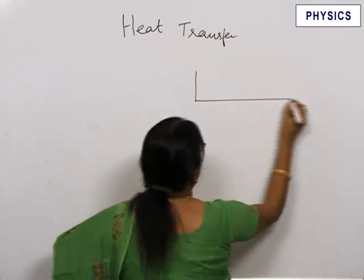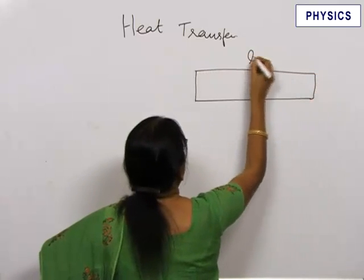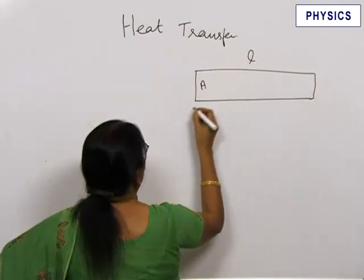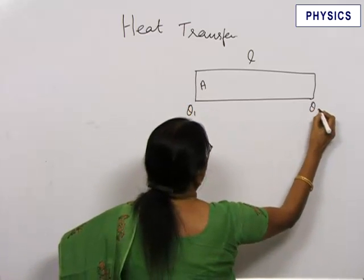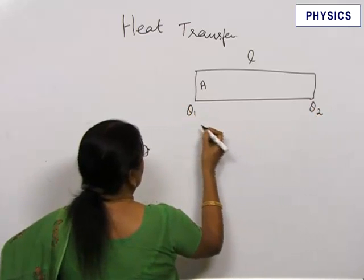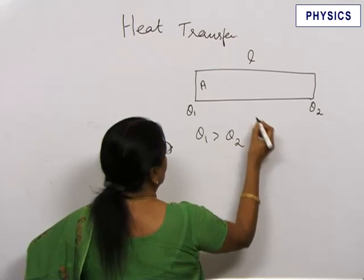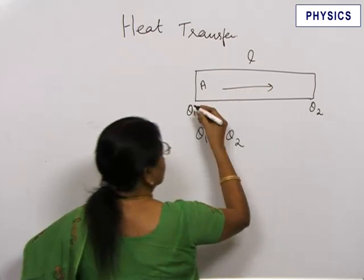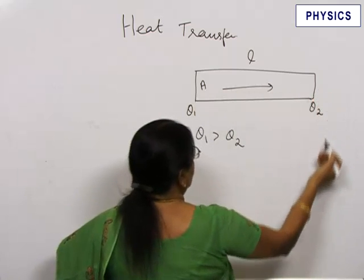So when you have a rod of length L and area of cross section A, say this is the hot end theta 1 and this is maintained at theta 2, then the condition must be theta 1 greater than theta 2, then heat energy flows from the left side to the right side of the rod.